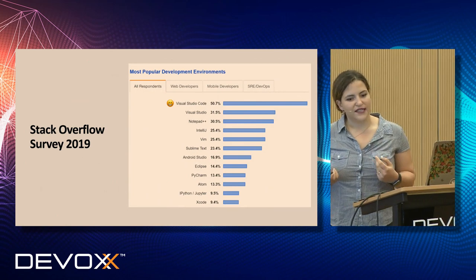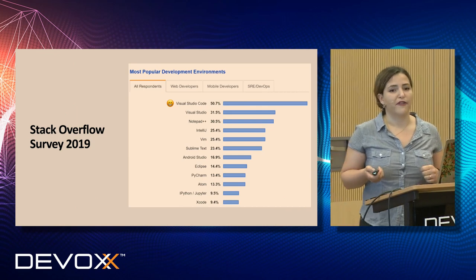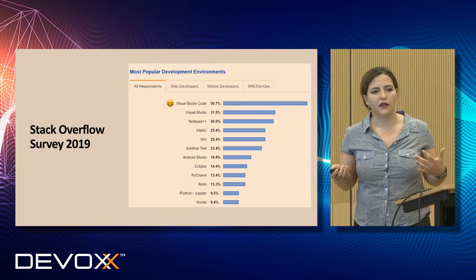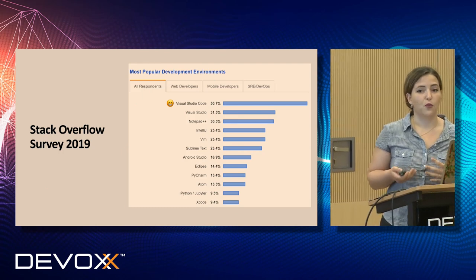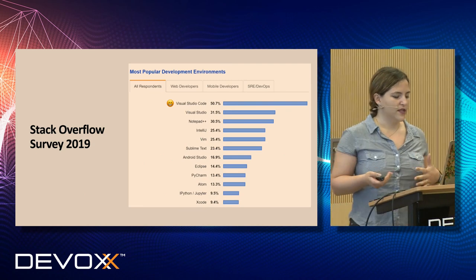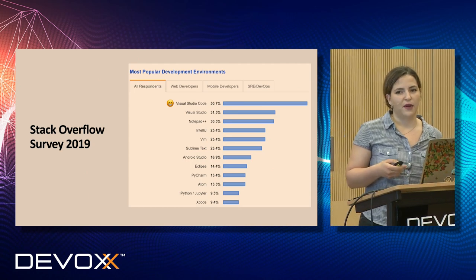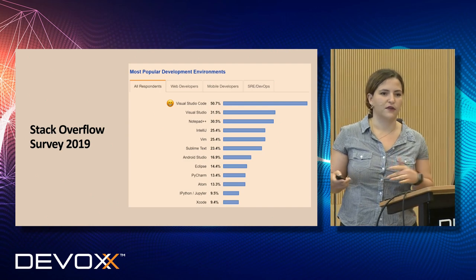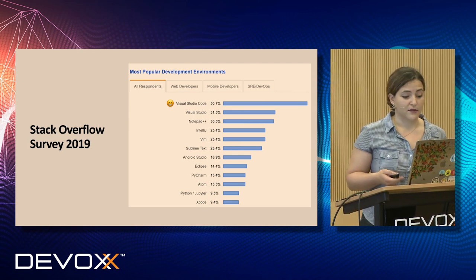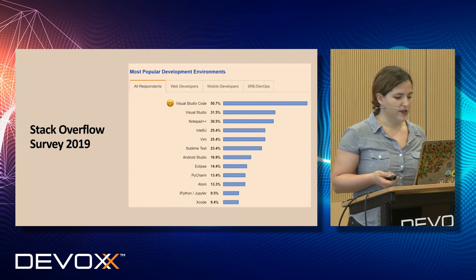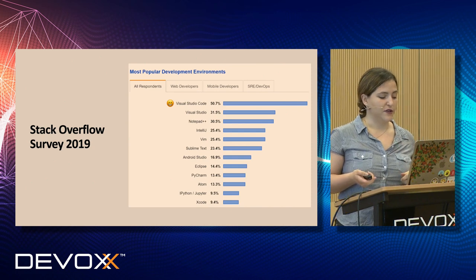During the 2019 survey, Visual Studio Code was chosen as the most popular development environment. We believe one of the reasons is because it's polyglot, and the world is changing. We see a lot of developers working with more than one programming language — it's not only writing Java, but also a bit of Python scripting, some Rust, or JavaScript changes. That's why VS Code became the most popular developer environment of 2019 according to Stack Overflow.